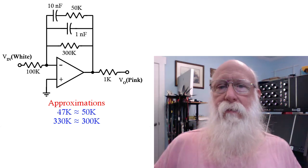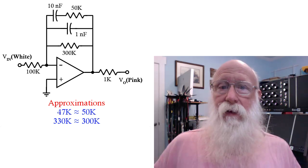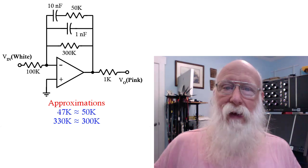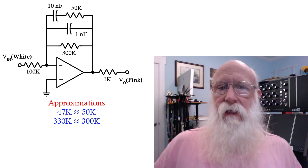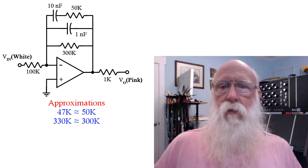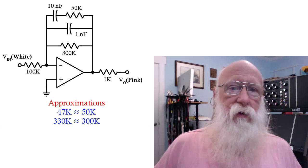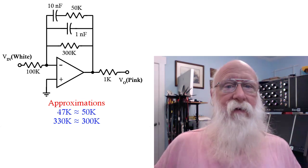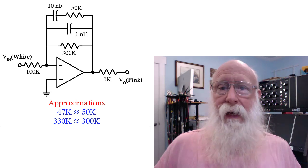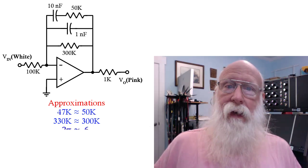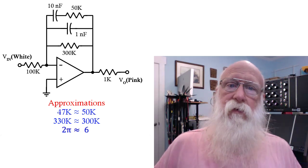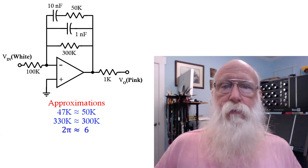Our next approximation may seem a little bit flaky, but it does help in doing the math in your head. Since I would prefer to work with frequency in hertz rather than frequency in radians per second, we're going to have to have a factor of 2π in our equations. And so I'm simply going to say 2π is approximately 6. It's actually 6.28 and so on, but that's pretty close.